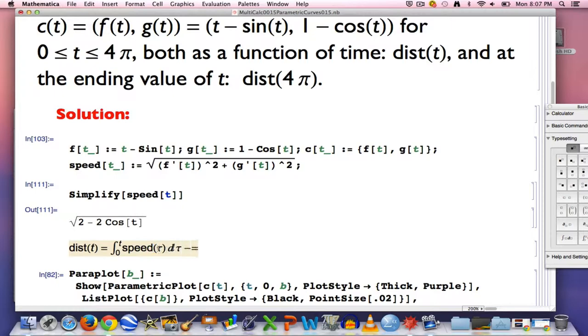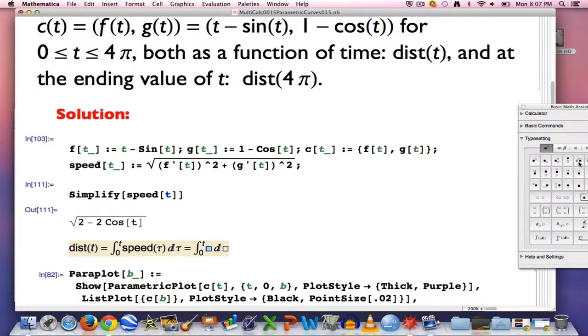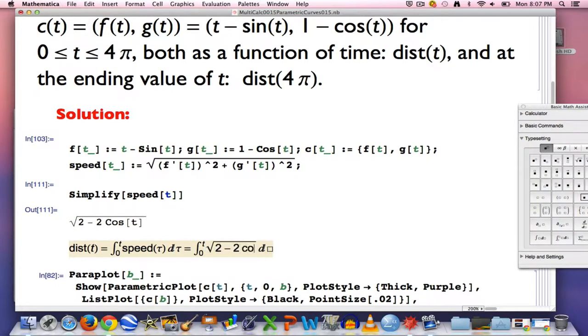So this is the integral that we must do for this particular speed function. So that's going to simplify to square root of 2 minus 2cos(τ) dτ. All right, that's the integral to do. As with many integrals involving trig functions, you need to use a trigonometric identity to help you solve it.